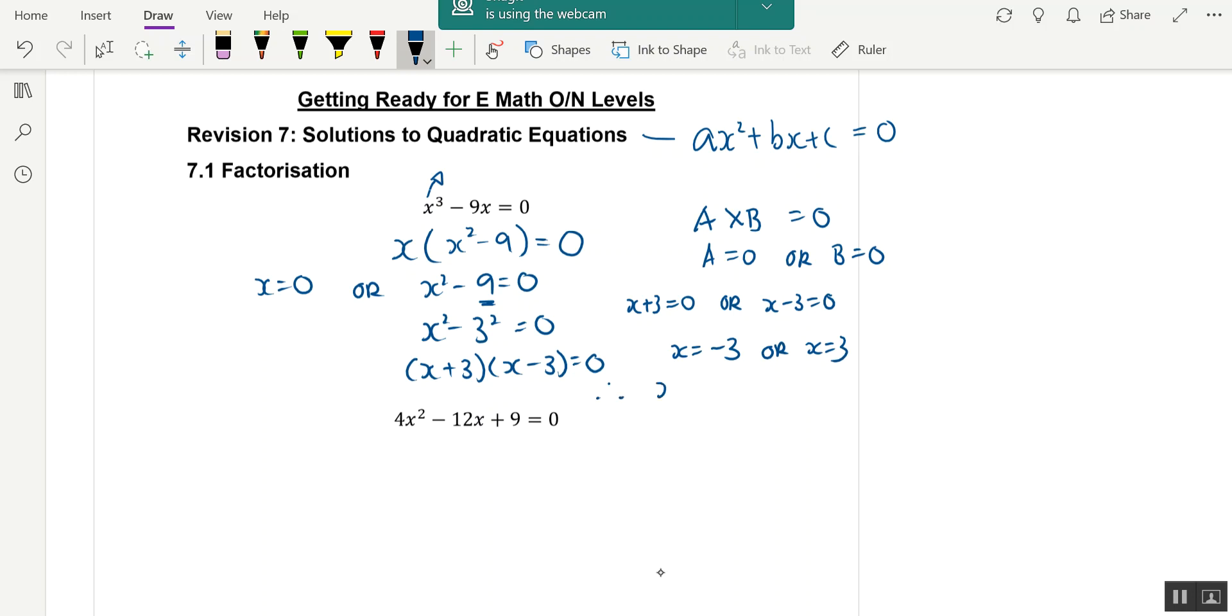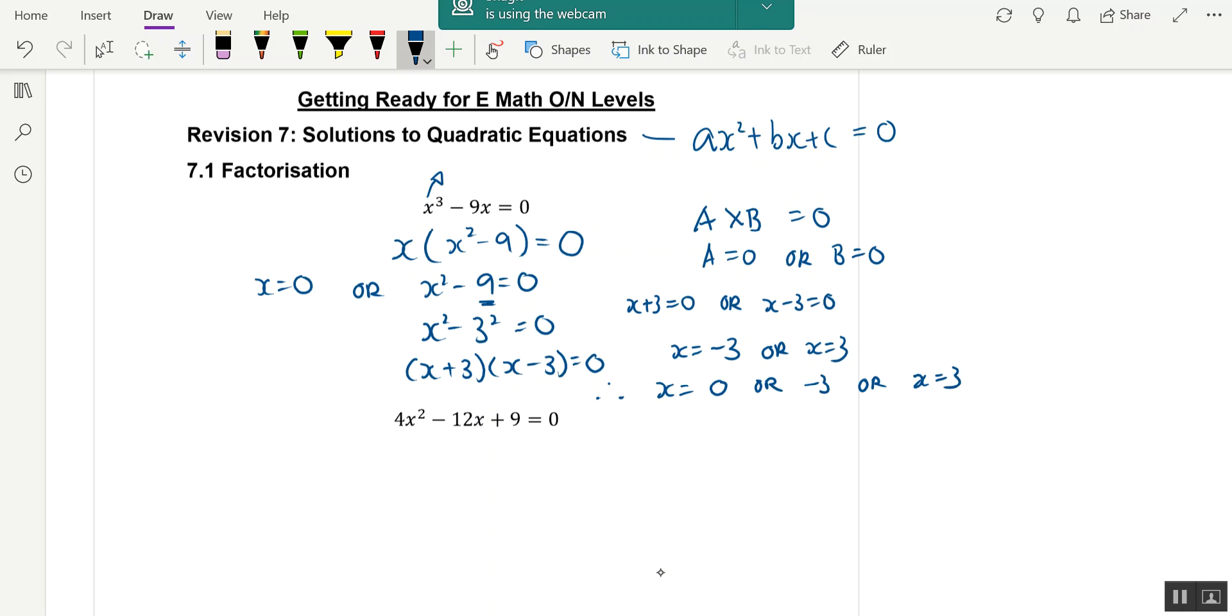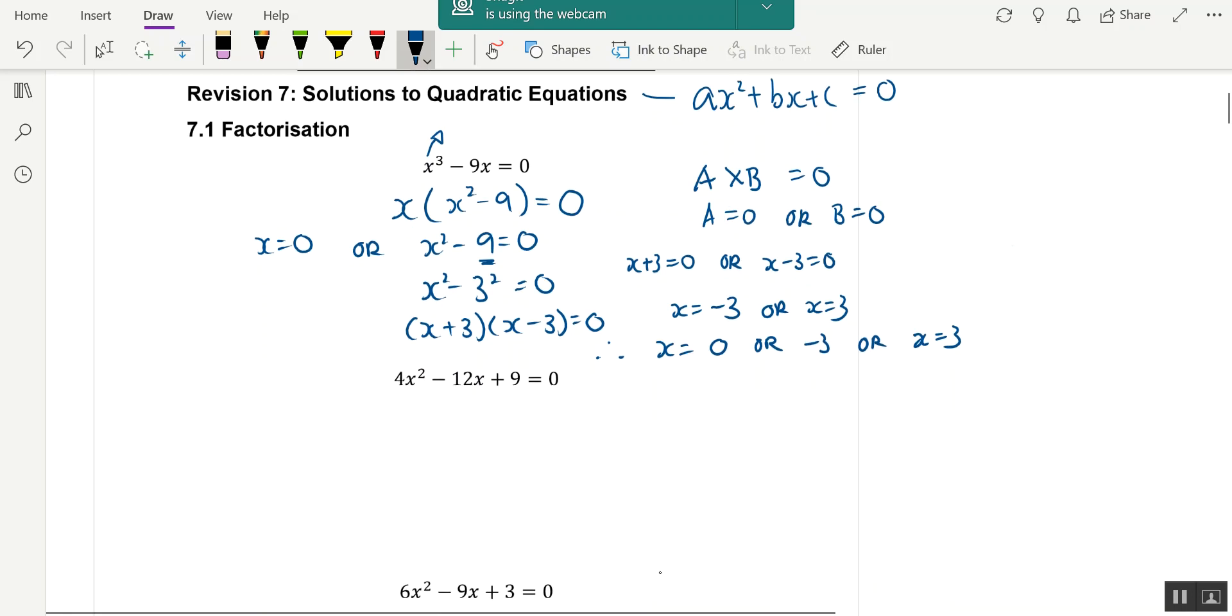Therefore, x equals to 0, or it must be an or, it cannot be an and, or x equals to 3. So the thing about quadratic equations is we try to bring everything to one side and equate it to 0. Then we factorize it and say that since the product is equal to 0, one of them must be equal to 0. And that's how we find the x.